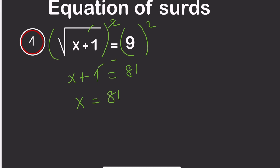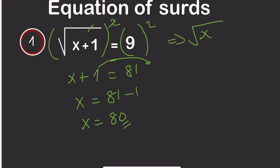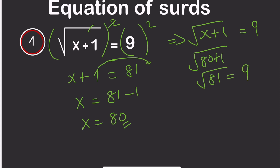So x equals 81 minus 1, which is 80. We can check this in the equation: x plus 1 equals 9. If x is 80, then 80 plus 1 gives us 81, and the square root of 81 is 9. Our answer is correct — x equals 80.